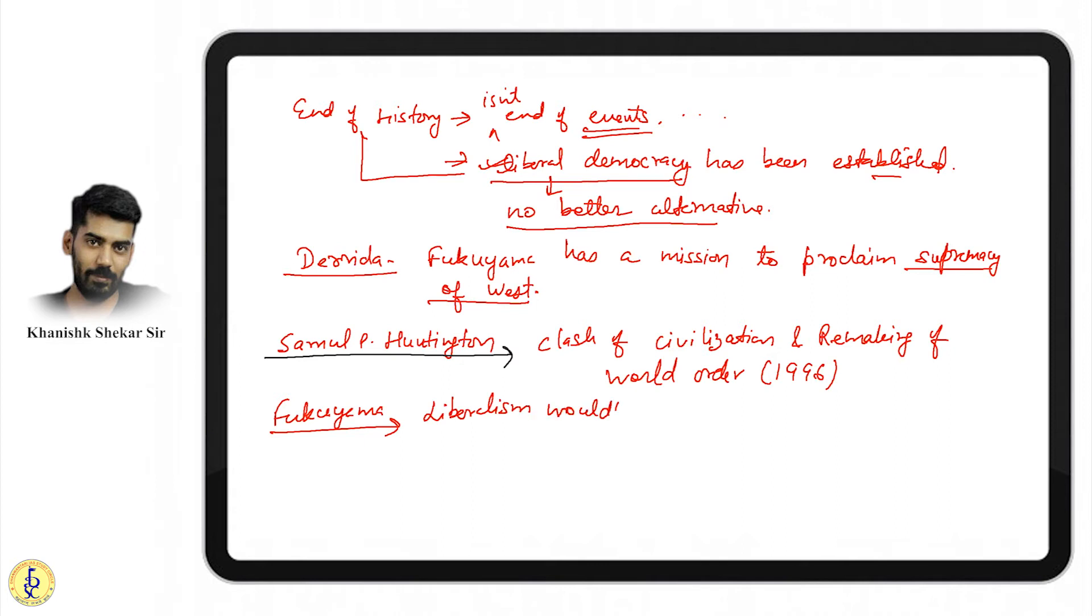Fukuyama himself modified his view three to four years back. He said liberalism would have been final, but the way it was practiced was not right. Liberalism would have been the end of history, but wrong policies of USA, especially George Bush, created challenges for American supremacy. America is the cradle of liberalism.